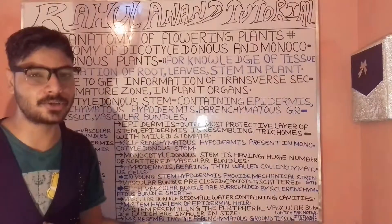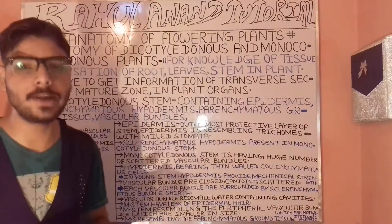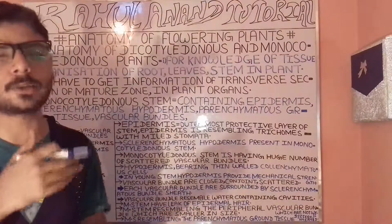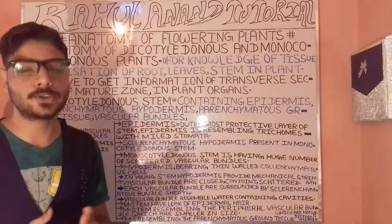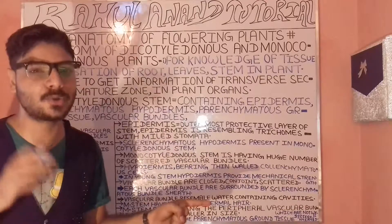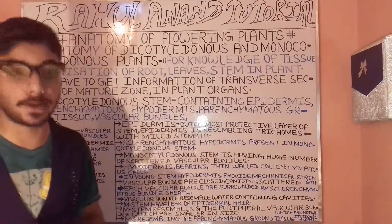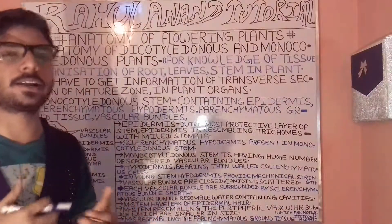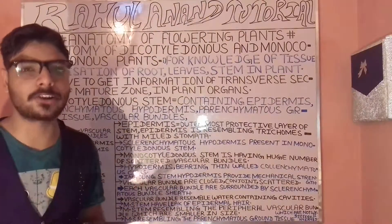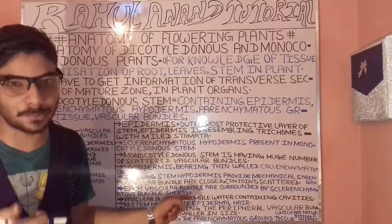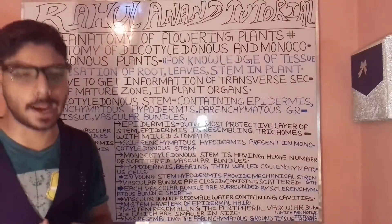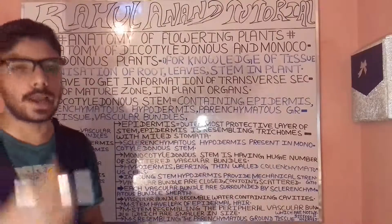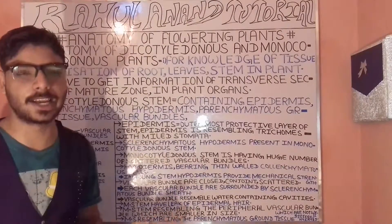Regarding peripheral vascular bundles: the peripheral vascular bundles project in a smaller ratio. When talking about the normal vascular bundle, it projects in a ring-line arrangement and in a wider and larger ratio.